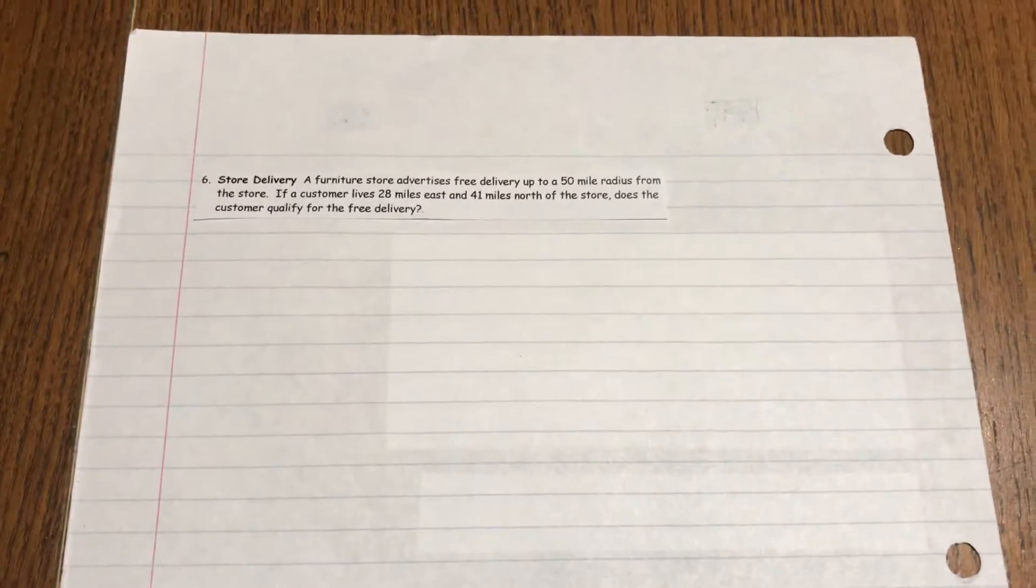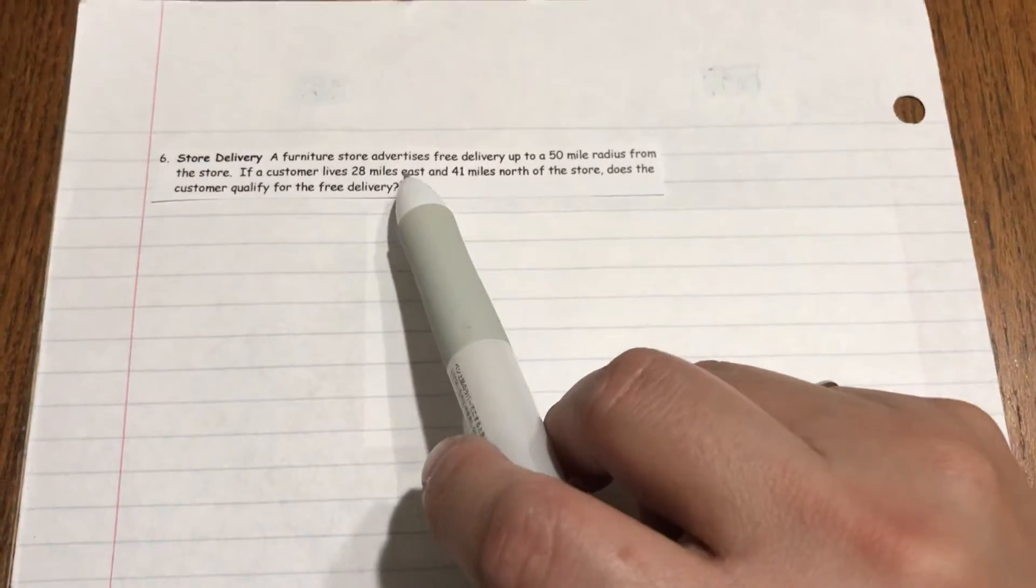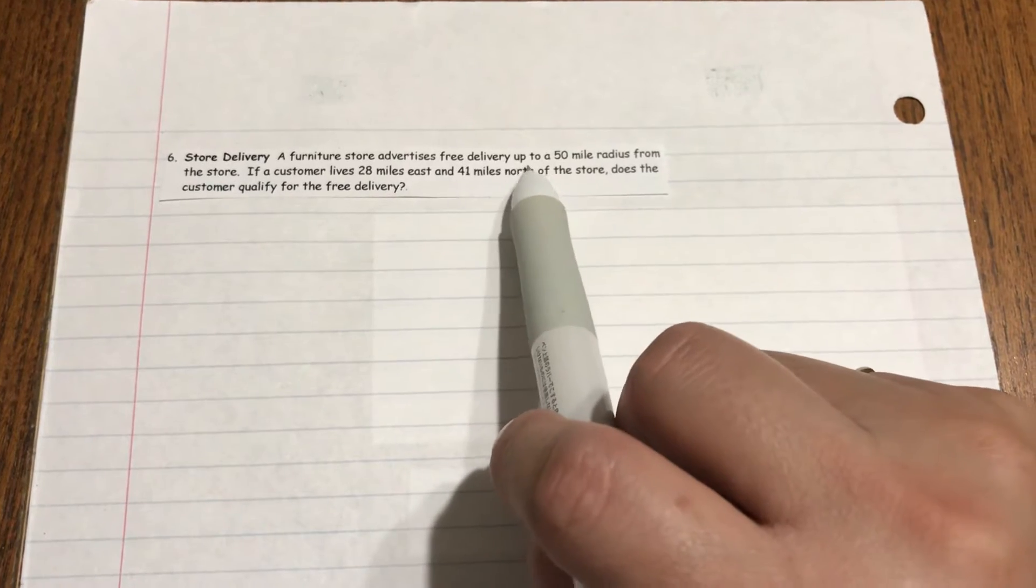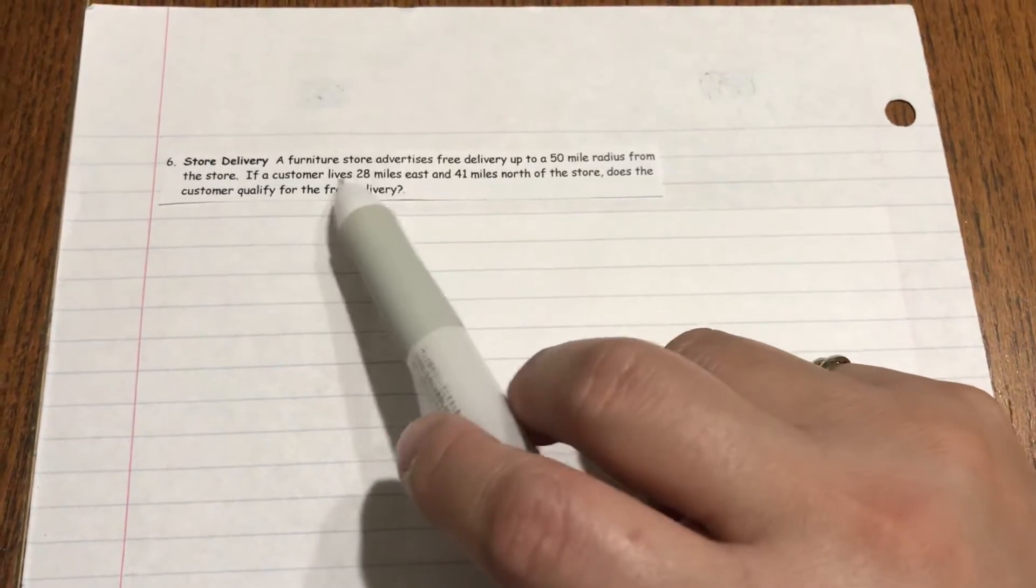Alright, the last piece for circle. It says store delivery. A furniture store advertised free delivery up to a 50-mile radius from the store.